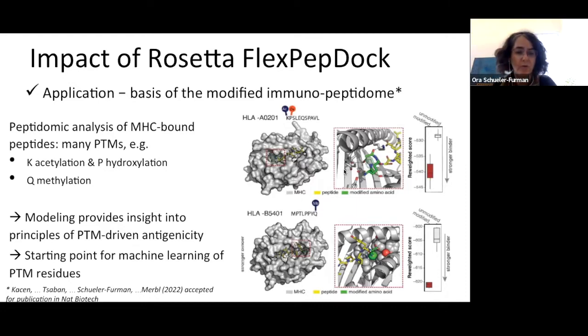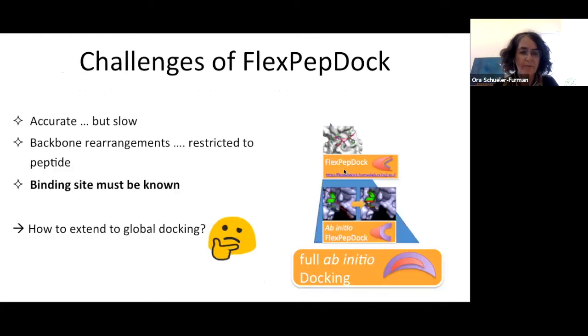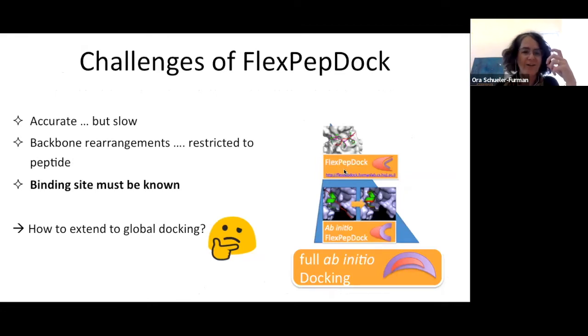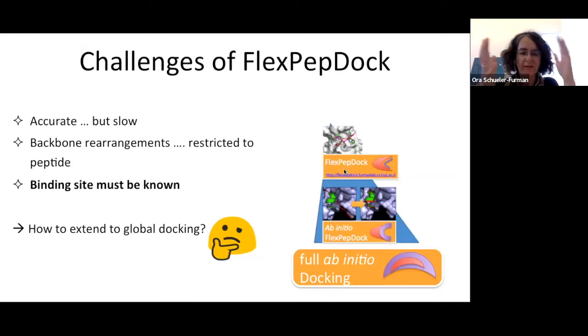They found many peptides that changed their MHC preferences based on post-translational modifications. We provided the structural basis to understand these new interactions. For post-translational modifications, we don't have sequence databases, so we needed the structural basis. For example, HLA-A2 has a hydrophobic motif to bind peptides, and we can see that scores for modified peptides are much higher than for unmodified peptides, providing structural evidence for their experimental findings.